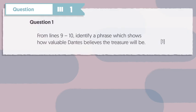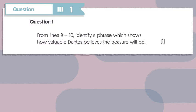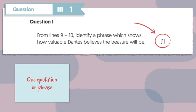Now let's move on to look at the questions. We'll start with Question 1. In this case, it's: from lines 9 to 10, identify a phrase which shows how valuable Dantes believes the treasure will be. Remember, Question 1 is only worth one mark, so you only need one quotation or phrase.